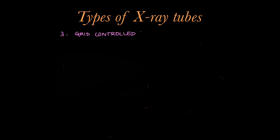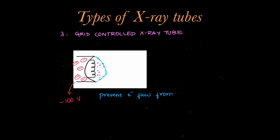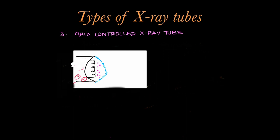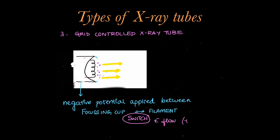Coming to the grid controlled x-ray tube, which is a short answer question for MD and DNB students. In this, the focusing cup is kept at a negative potential in relation to the filament at the cathode. Increasing the negative potential to up to minus 100 volts will stop the flow of electrons from cathode to anode and shuts down the tube current, acting as a grid to control x-ray production. That negative potential between the focusing cup and the filament, when increased or decreased, acts as a switch for tube current and hence controls x-ray production. These are used in DSA and cine-radiography x-ray tubes.